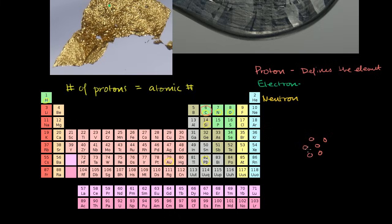You can have versions of carbon that have a different number of neutrons. So the neutrons can change, the electrons can change, and you can still have the same element. But the protons can't change — if you change the protons, you've got a different element.